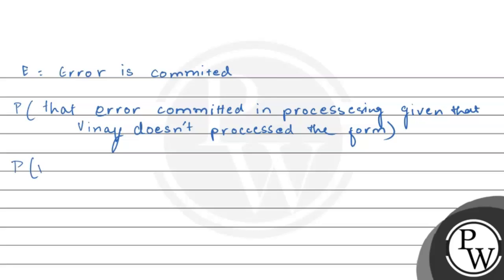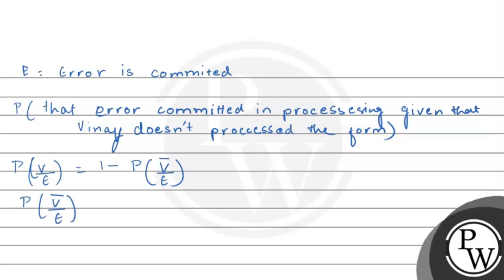We start with the probability of V given E. But we don't want the probability that the form is processed by Vinay given error — we want the complement. So we find the probability of V' given E, which is equal to 1 minus probability of V given E. Now we set up the probability of V given E, meaning Vinay processes the form and an error is committed.